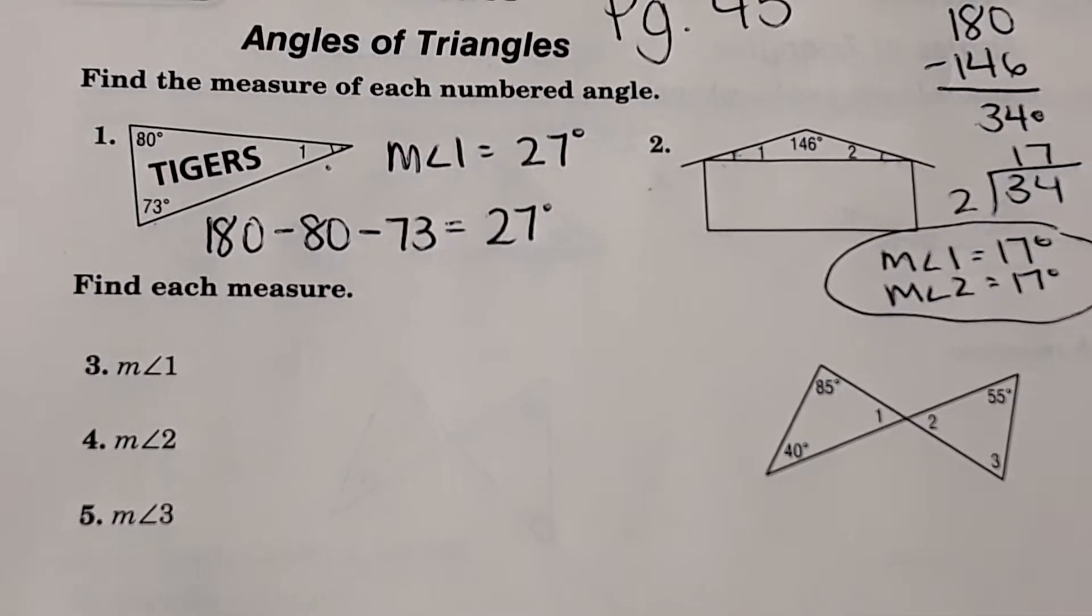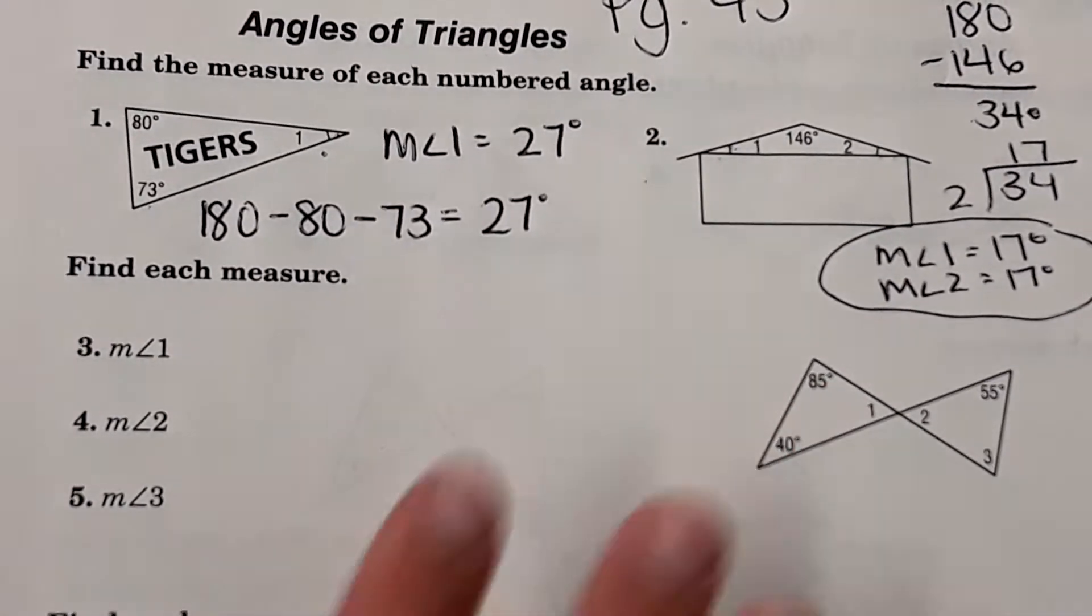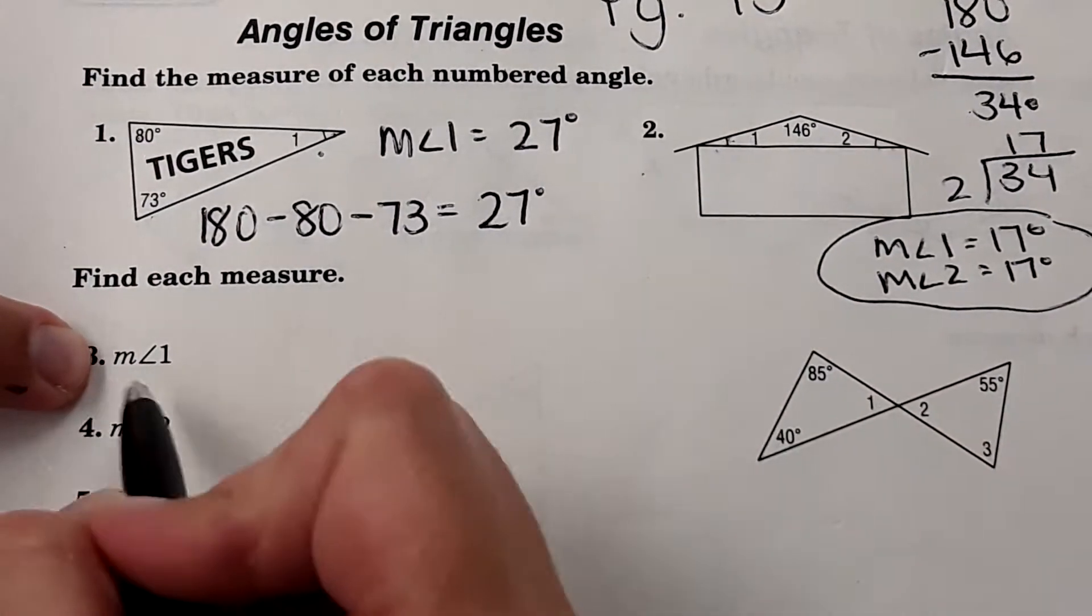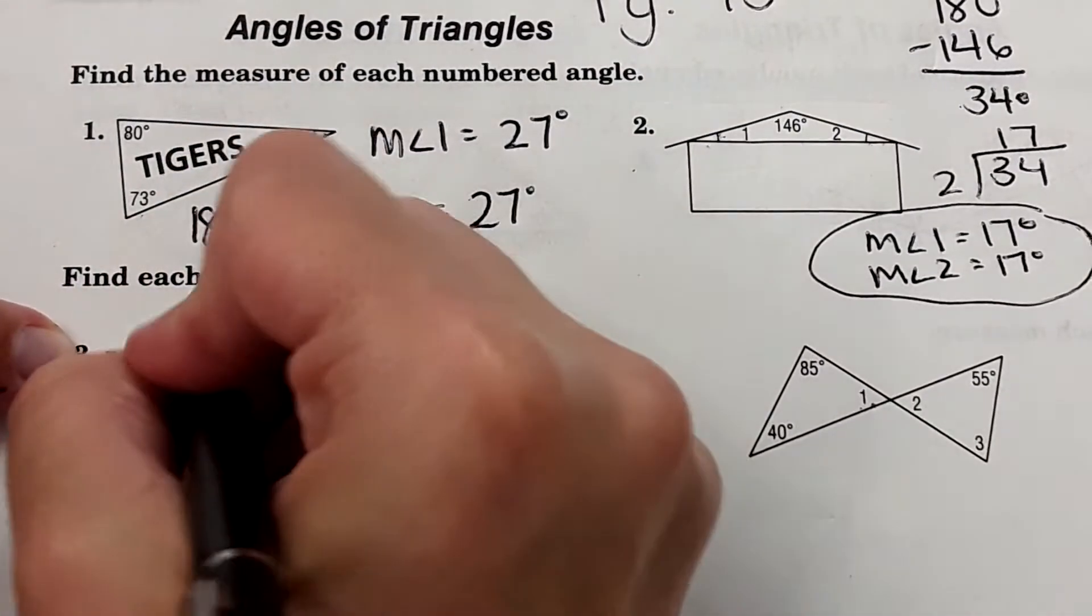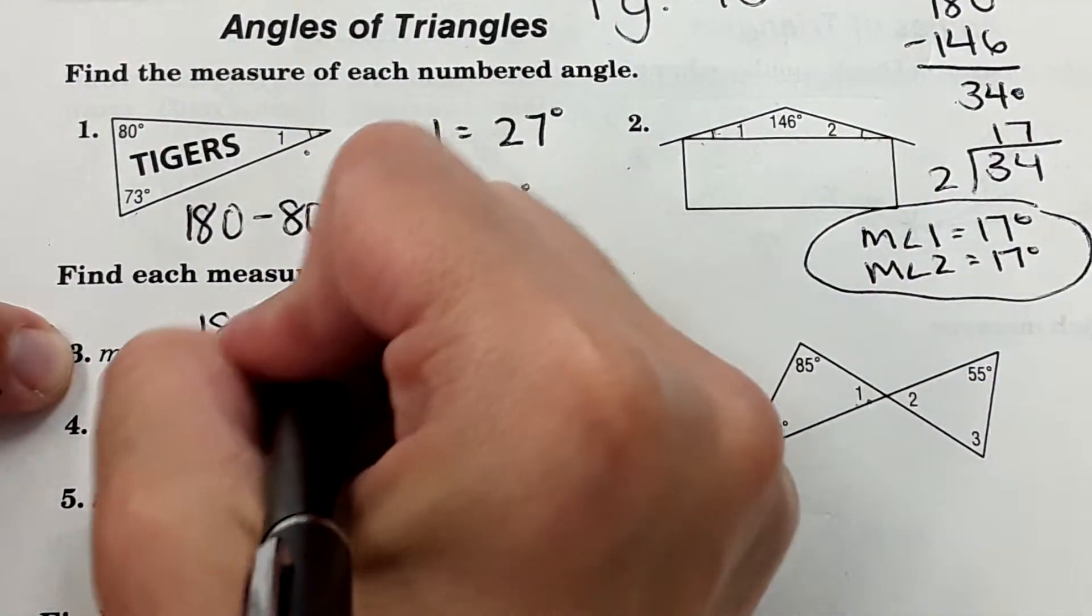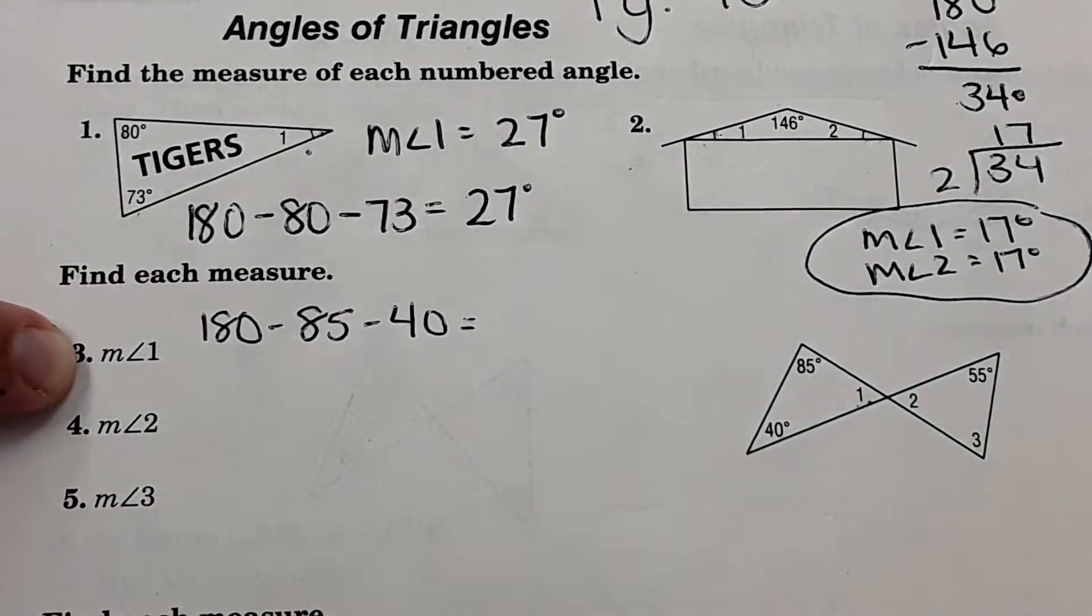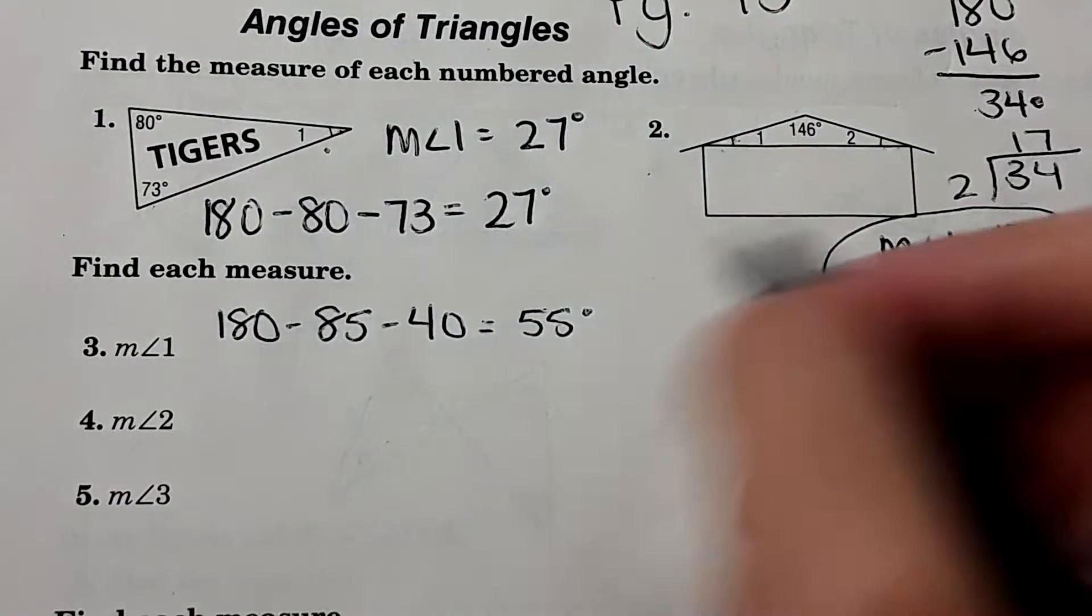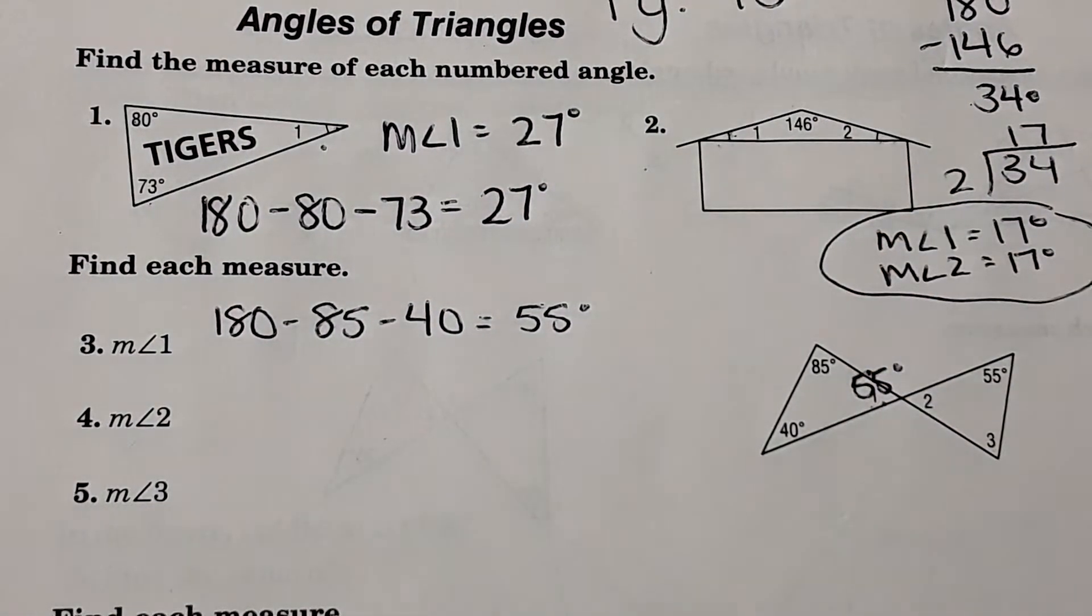Okay, then three, find each measure. So here is the picture. It says find the measure of angle one. Well, these three angles we know add to 180, so 180 minus 85 minus 40 equals 55 degrees. And then once you find that angle, just write it on the picture because it'll help you figure out other angles.